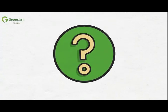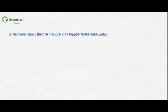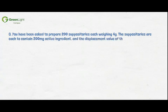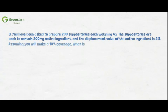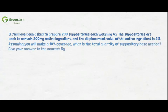Let's attempt an exam-style question. You have been asked to prepare 200 suppositories, each weighing 4 grams. The suppositories are each to contain 200 mg active ingredient and the displacement value of the active ingredient is 2.5. Assuming you will make a 10% overage, what is the total quantity of suppository base needed, giving your answer to the nearest 5 grams? Pause the video now to attempt this question, then press play to see the working out and answer.